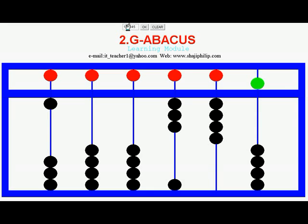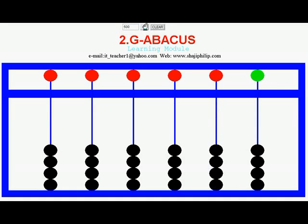Can you guess how to represent 500? We have to move the Heaven bead down from the 100's position — that will be 500. And for 800: 1 Heaven bead plus 3 Earth beads to be set in the 100's position, so that it will represent 800.